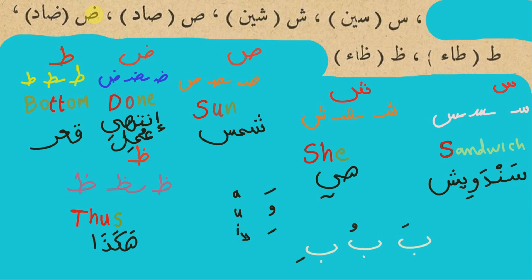DA. Also notice the difference — just the dot on top. So these are two letters: DA and TA. Notice the same shape; the difference is this dot here on top.